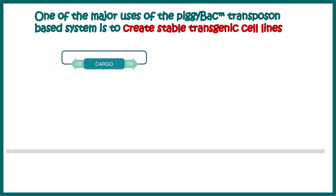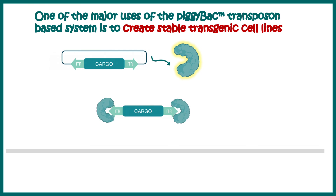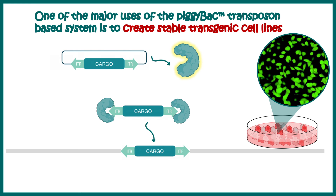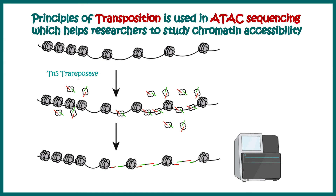Now let us try to understand more applications of these transposons. Transposons are really important in the field of molecular biology, especially recombinant DNA technology. For example, if you want to create a stable transgenic cell line, your transgenic construct needs to be integrated into the genome, and that is done by PiggyBac vectors, which are transposon-based vectors. This vector along with the transposase enzyme is injected into the cell, and the cargo is integrated via the transposition mechanism. This integration is fairly stable, so you can create a cell line stably expressing a gene like GFP. Additionally, the principles of transposition are now used in ATAC sequencing, a technique used to study chromatin accessibility.